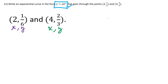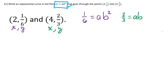For the first point, y is 1/6, so I write: 1/6 equals a times B to the 2nd power. For the second point, y is 2/3, so I write: 2/3 equals a times B to the 4th power. Now I have two equations with two unknowns.